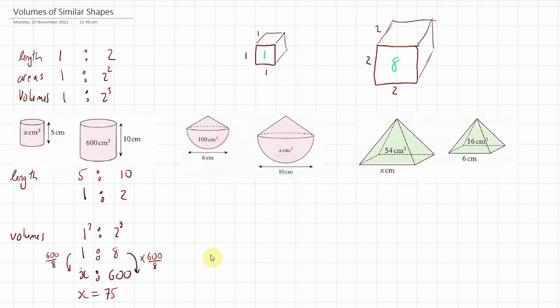Now the next one, what have we got here? We've got length. The ratio is 6 to 10, which is divided by 2, so 3 to 5. Now, we can say here that is the same as 1 to 5 thirds. So I've divided both sides by 5 thirds. That means that our volume ratio is going to be 1 cubed to 5 thirds cubed.